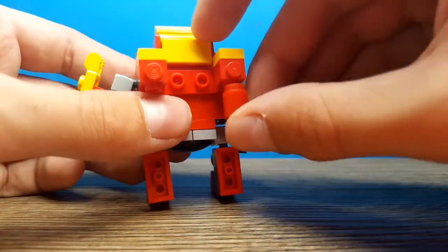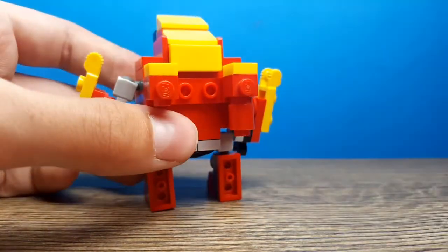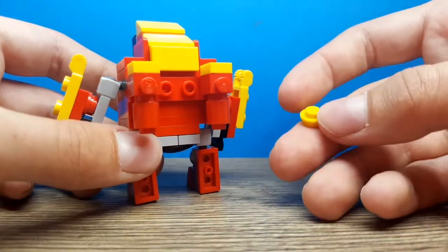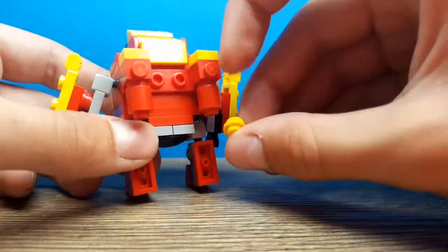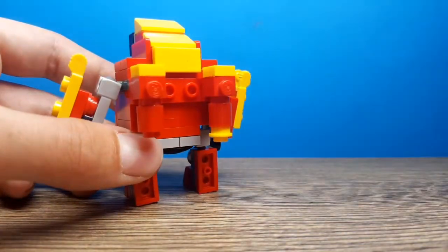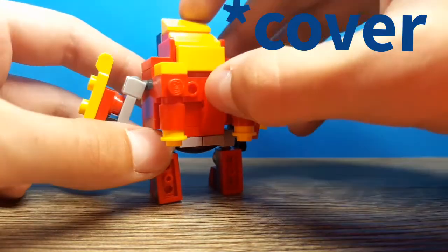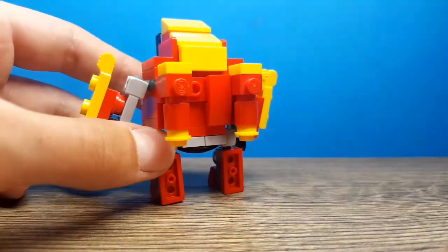Then add these 2 red 1x1 cylinders on each side. Add this 1x1 yellow stud underneath on each side. We're back with 2 of these pieces just like that.